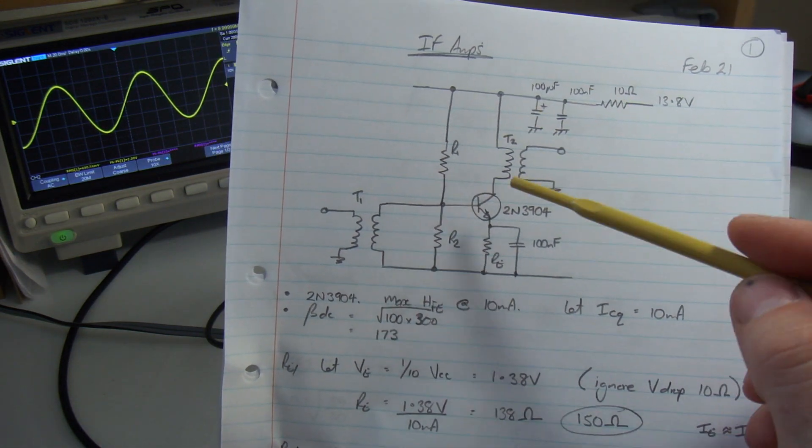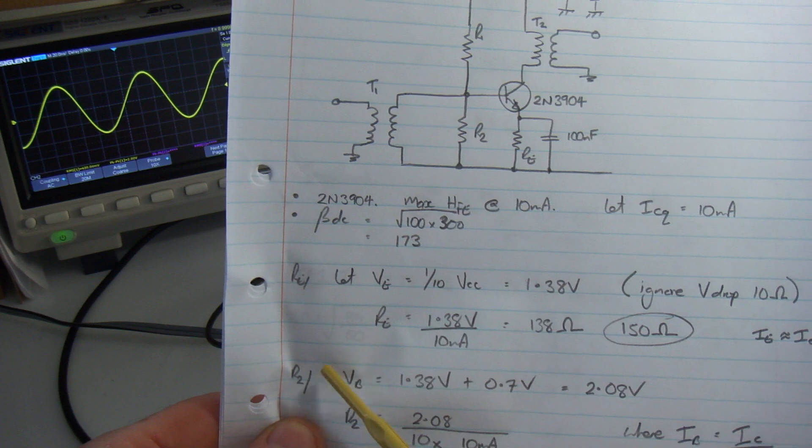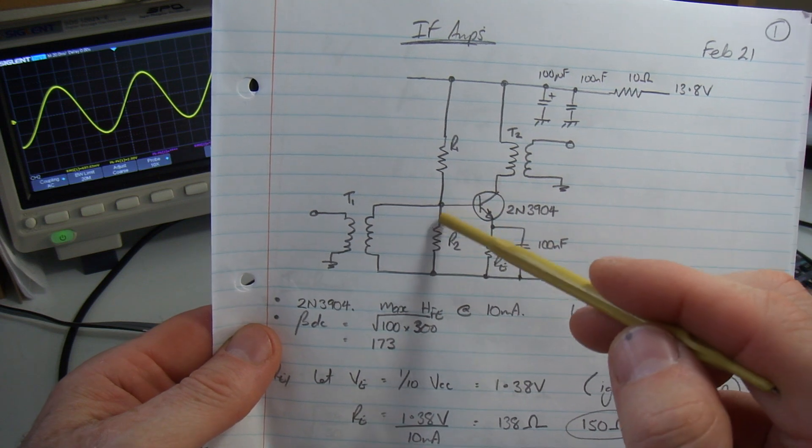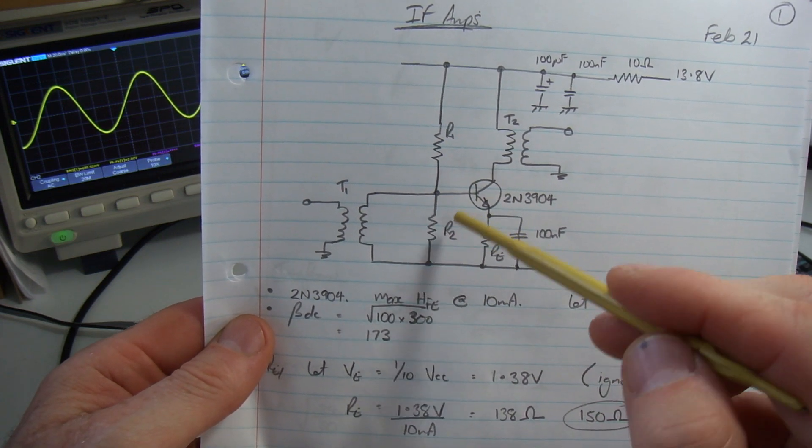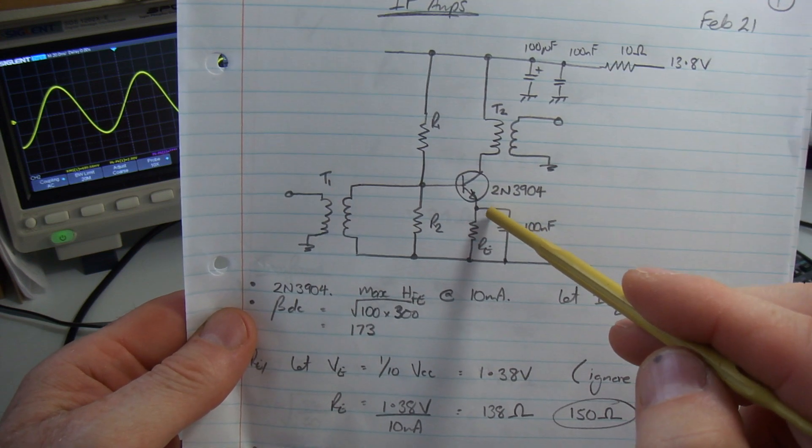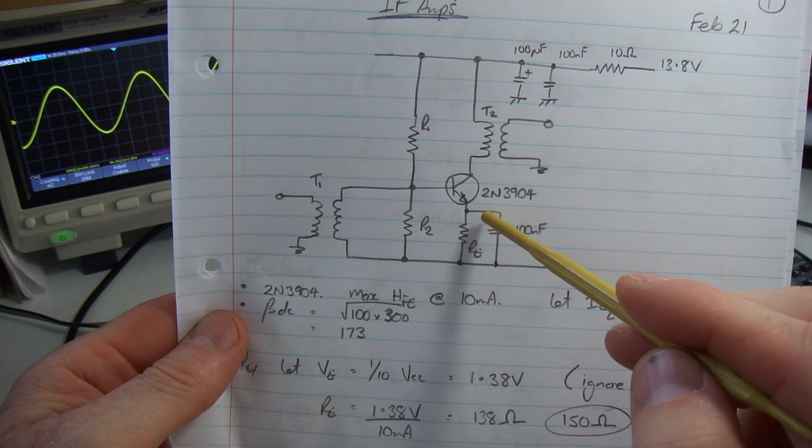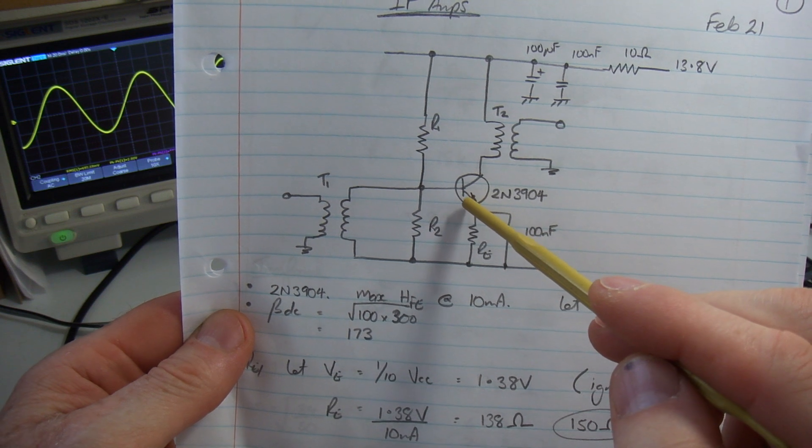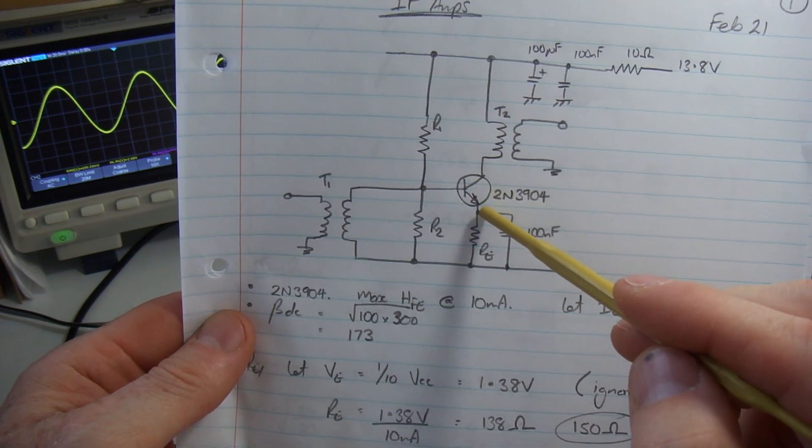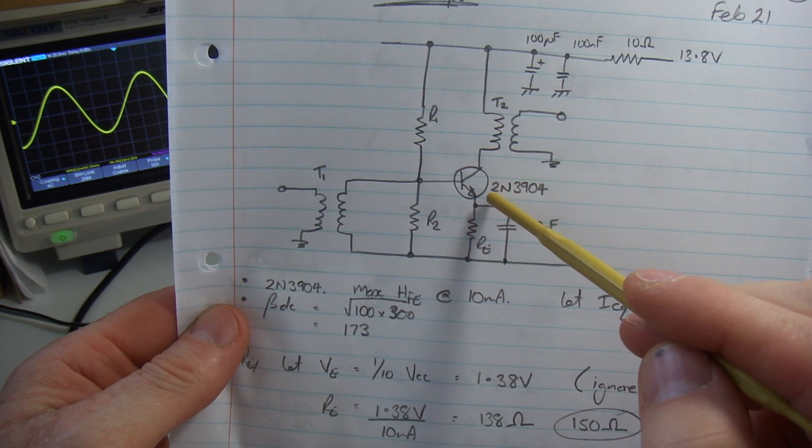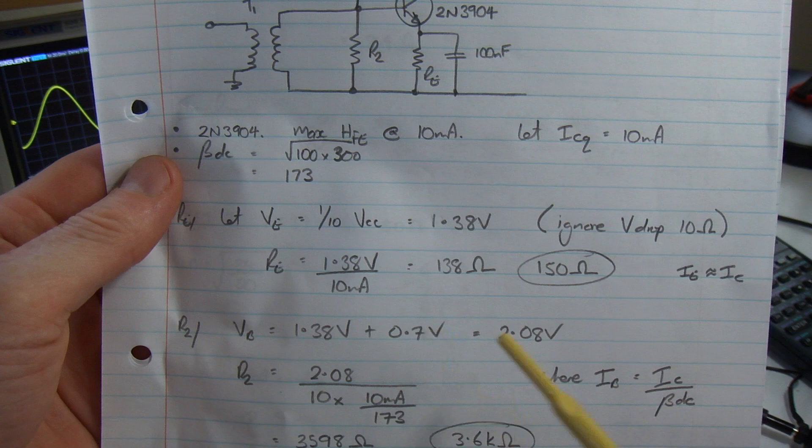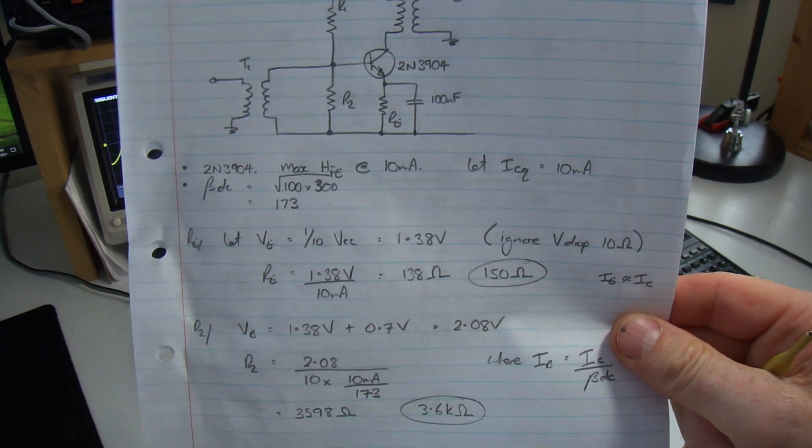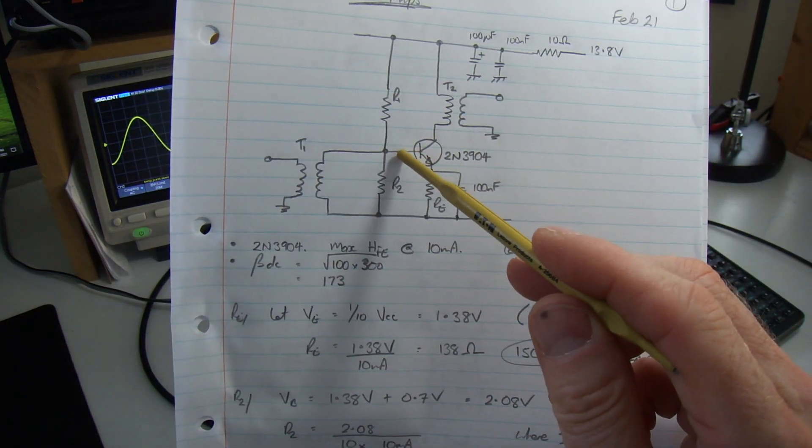So the next resistor I'm going to work out is R2, this value here. I'm going to work out what the voltage is across it and then divide that by the current through it. If the voltage at the emitter is 1.38 volts, and the potential difference across that emitter base junction is 0.7 volts for a silicon transistor, then 1.38 plus 0.7 comes out at 2.08 volts. So that's going to be the voltage at the base.